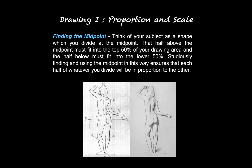First off, finding the midpoint. Think of your subject as a shape which you divide at the midpoint. The half above the midpoint must fit into the top 50% of your drawing area, and the half below must fit into the lower 50%. Studiously finding and using the midpoint measures that each half of whatever you divide will be in proportion to the other. It's also important to develop your drawing as a whole — this midpoint measurement helps ensure that your subject is going to be placed correctly on the paper and that you're seeing and developing your composition as a whole.